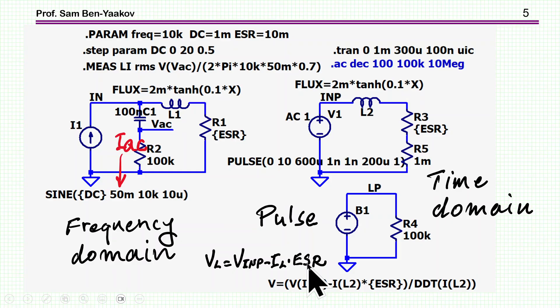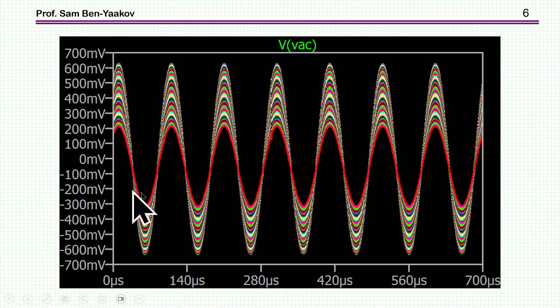I'll later show that in all practical cases, the difference is very small. This is the expression here, and the derivative is using the LTSpice operator of derivative DDT, the derivative of the current of the inductor. So this is the pulse approach, and this is the impedance approach. Let's start with the impedance approach.